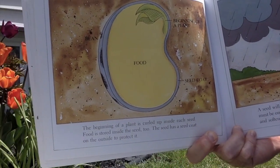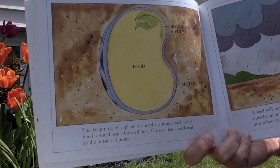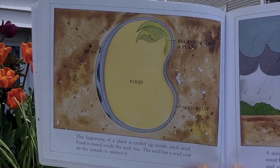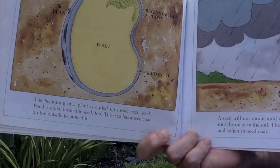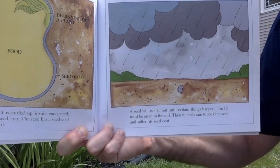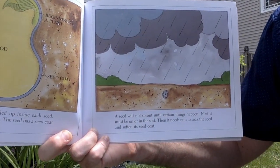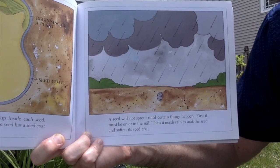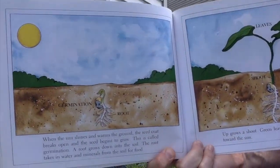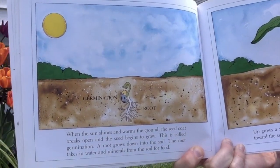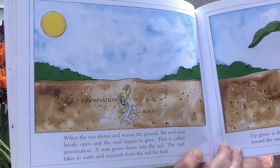The beginning of a plant is curled up inside each seed. Food is stored inside the seed too. The seed has a seed coat on the outside to protect it. If you're lucky enough to have beans at home, you can split open a bean and see the tiny plant right inside. A seed will not sprout until certain things happen. First, it must be on or in the soil. Then it needs rain to soak the seed and soften its seed coat. When the sun shines and warms the ground, the seed coat breaks open and the seed begins to grow. This is called germination.